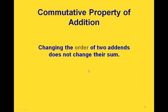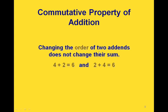The next one is the commutative property of addition. This says that changing the order in which we add two things does not change the sum that we end up with. So we can look at the sum of 4 and 2 in two different ways: 4 plus 2 is the same as 2 plus 4 — they both come out to be 6.